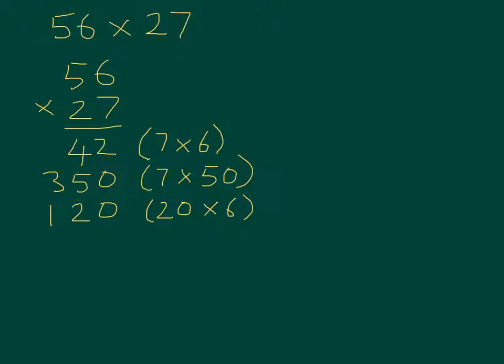I can see I've got one multiplication left, which is 20 times, not 5, but 50. 20 times 50, or 2 times 5 is 10, 2 times 50 is 100, 20 times 50 is 1000.